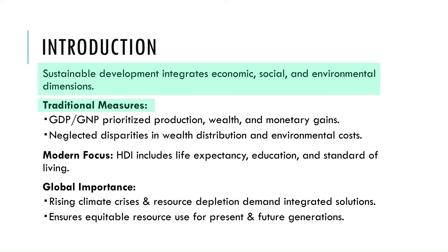Traditionally, countries relied on indicators like GDP (gross domestic product) and GNP (gross national product) to measure progress. These indicators focus on production, wealth, and monetary gains. But here's the problem — they ignore critical aspects like income inequality and environmental degradation. It's like judging a book by its cover while missing the story inside.